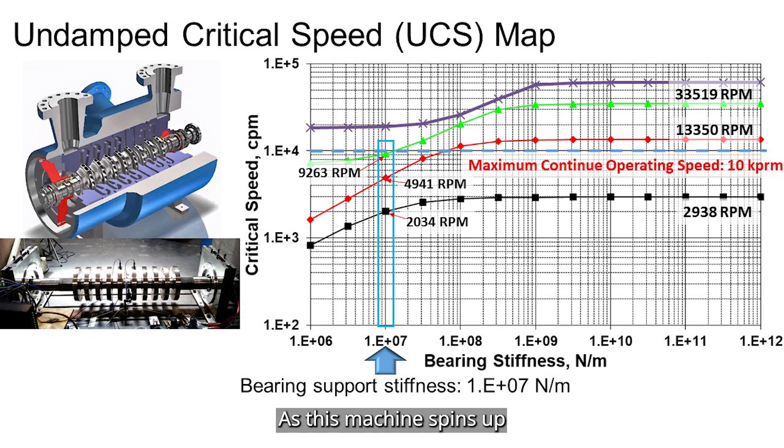As this machine spins up from 0 to 10,000 rpm, you will pass through three critical speeds. The first one is around 2,000 rpm. The second one is around 5,000 rpm. And the third one is around 9,200 rpm. Each of these corresponds to a different mode shape. The important thing to note here is that if your third critical speed is close to your operating speed, you will likely get a high vibration amplitude near that point. And that's not ideal. You generally want to avoid running right at the critical speed.